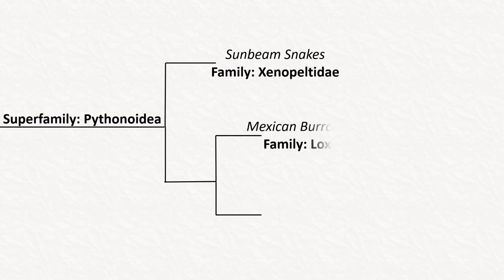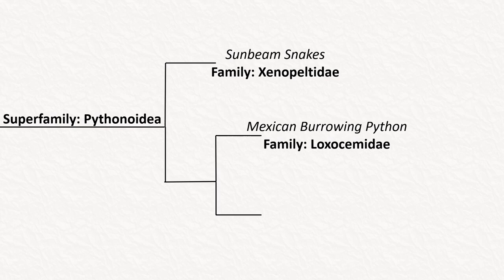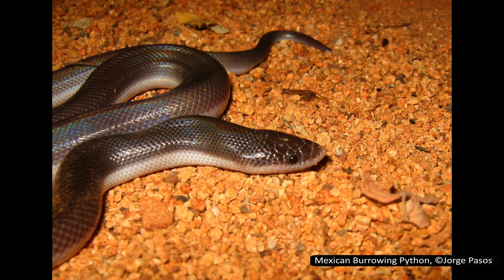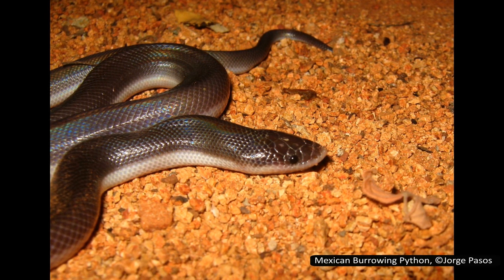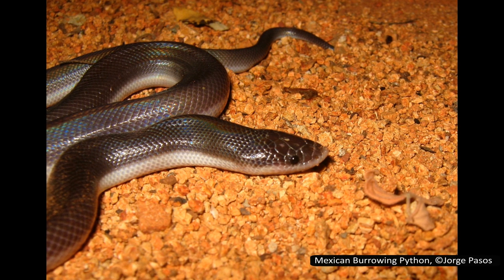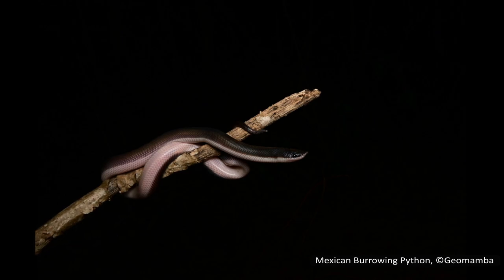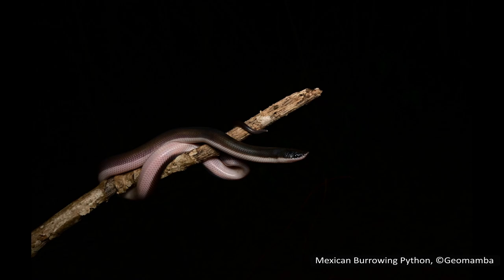The next family is Loxosemidae, which contains only one species — Loxocemus bicolor, the Mexican burrowing python, and the closest relative to the true pythons. They are found along the Pacific coast of Mexico, with their range extending into Central America as far south as Costa Rica. Their colouration is usually dark with patches of white scales, and interestingly, after shedding, most pigment can disappear, resulting in a white snake with small dark patches on its head. They are semi-fossorial, with a shovel-shaped head and reduced eyes. They are believed to mostly eat lizards and rodents but will also eat invertebrates and eggs, and are oviparous, laying clutches of two to four eggs.